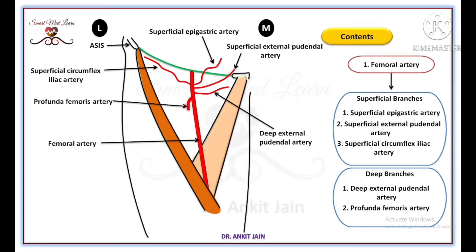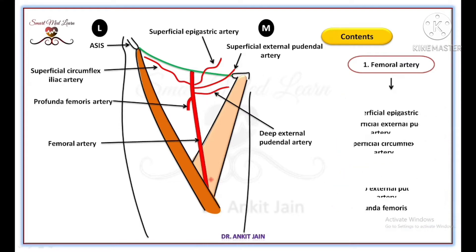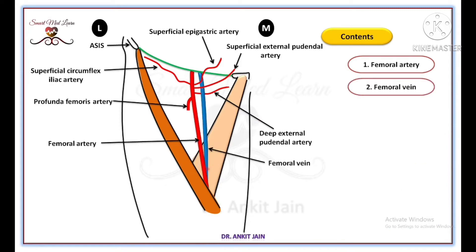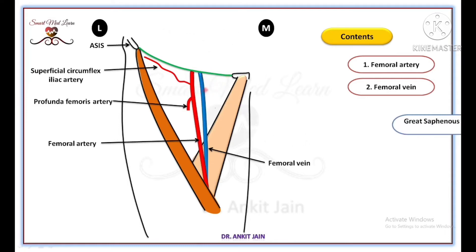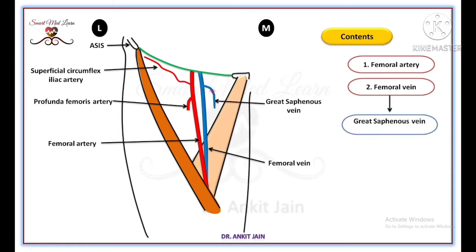The profunda femoris artery is the largest branch of the femoral artery and arises from the lateral side of the femoral artery in the femoral triangle. At the apex of the femoral triangle, the femoral vein lies posterior to the femoral artery, then runs upward along the medial side of the femoral artery. In the upper part of the femoral triangle, the femoral vein receives the great saphenous vein through the saphenous opening.